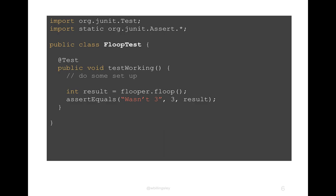Worth mentioning again from the Gradle video: when Gradle runs the tests, the test runner needs to scan the classes on the classpath to discover tests marked with the @Test annotation. But given all the libraries you've imported, there could be thousands or tens of thousands of classes to look through, which wouldn't be efficient. So the test runner looks for classes that have 'Test' in the name — at the beginning or the end, such as TestFloop or FloopTest — and checks those classes for methods marked with @Test that need to be run.